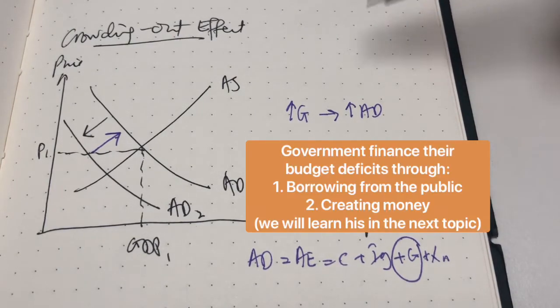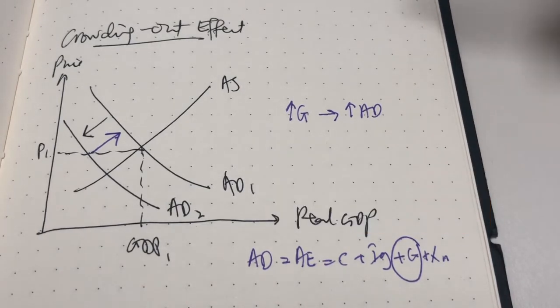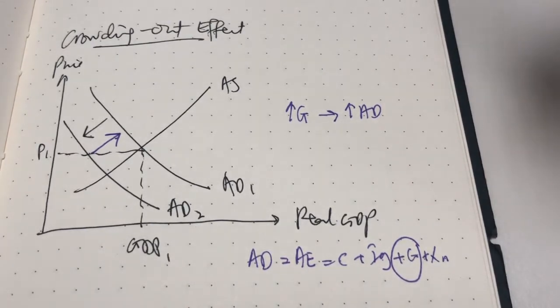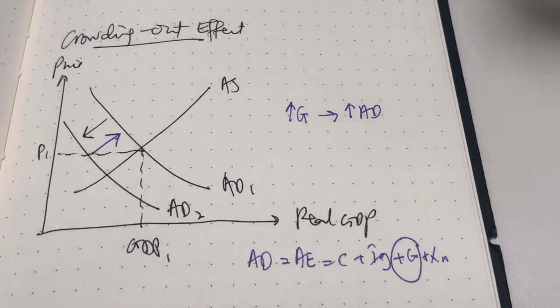One way is to borrow from individuals as well as firms. When the government borrows, it is effectively competing against the private sectors as well for finance and for funds. Now there is more demand for finance compared to the supply of finance. Therefore, it will increase the interest rate.